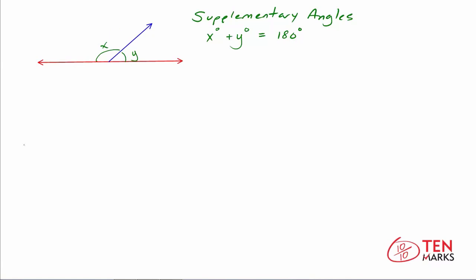You can have more than two angles that are supplementary. So if you throw another angle in here, you've got three angles. But when you add them all up — let's call this Z — when you add X, Y, and Z, you're still going to get 180 degrees. So supplementary angles are those that sum to 180 degrees.